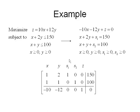So we'll put it into my matrix. So the first row becomes 1, 2, 1, 0, 0, 150. The second row becomes 1, 1, 0, 1, 0, 100. And the last row becomes negative 10, negative 12, 0, 0, 1, 0.